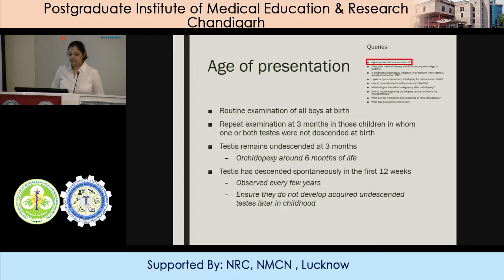Regarding age of presentation, all boys are usually examined at birth routinely, and repeat examination is done at 3 months in children in whom one or bilateral testes are not descended at birth. If it remains undescended after 3 months, orchiopexy is recommended at around 6 months of life. Testes that have descended spontaneously in the first 12 weeks are observed every few years to ensure that they do not develop acquired undescended testes later in childhood.